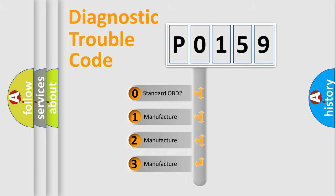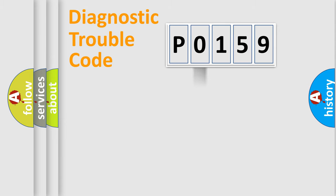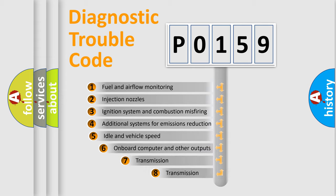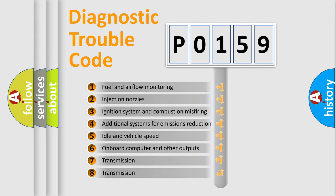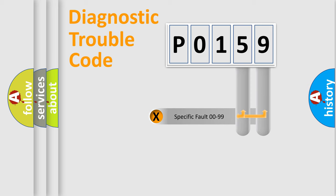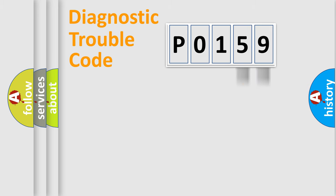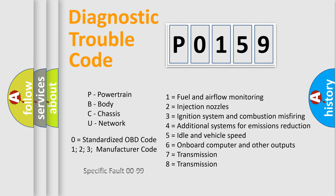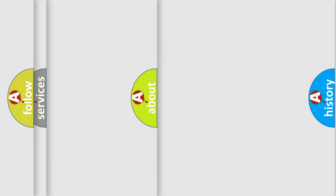If the second character is expressed as zero, it is a standardized error. In the case of numbers 1, 2, or 3, it is a manufacturer-specific error code. The third character specifies a subset of errors. This division is valid only for the standardized DTC code, where the second character is expressed by the number zero. Only the last two characters define the specific fault within the group.